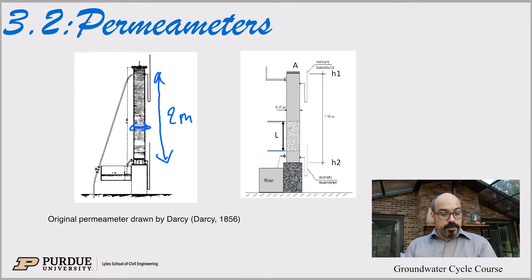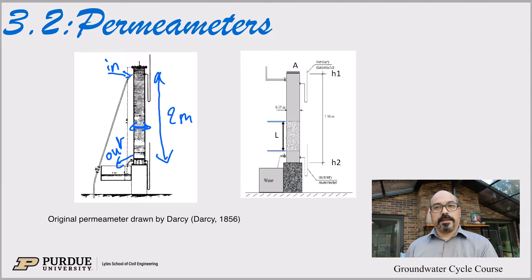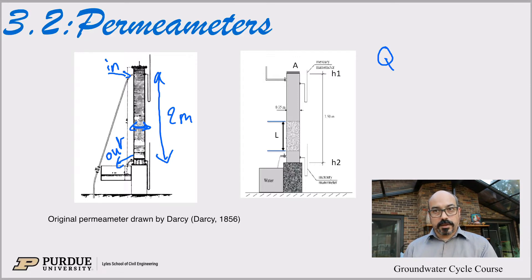The principle is simply to flow some water in and measure the water out — the mass balance. And here's a sketch on the right hand side with the relevant parameters. The goal of Darcy was to know how much water we can get out of a sand column, out of a formation. So Q should be proportional to...